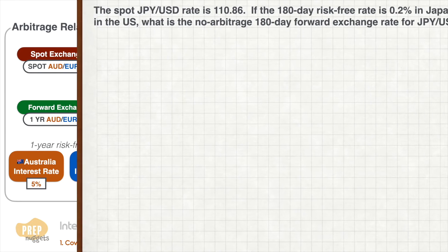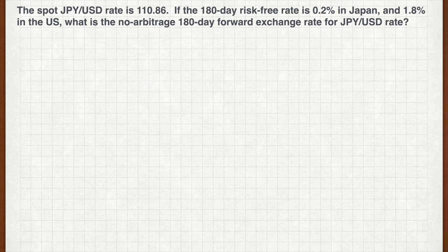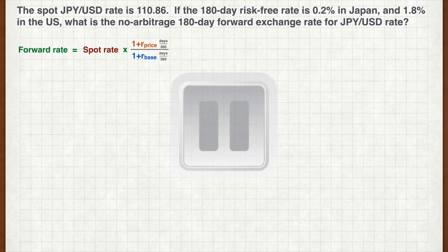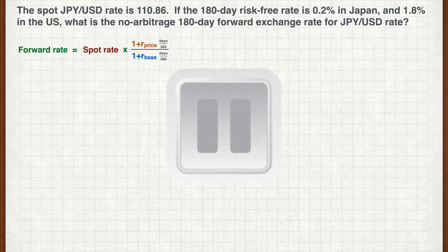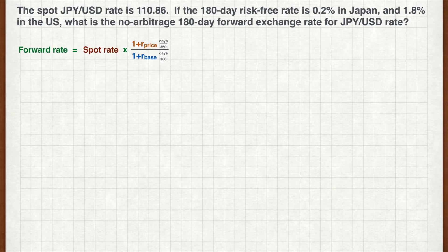Let's have some practice. The spot Japanese yen per US dollar rate is 110.86. If the 180-day risk-free rate is 0.2% in Japan and 1.8% in the US, what is the no-arbitrage 180-day forward exchange rate for JPY per USD? Pause the video now and work out your answer.